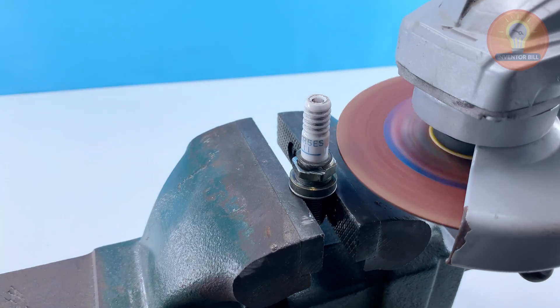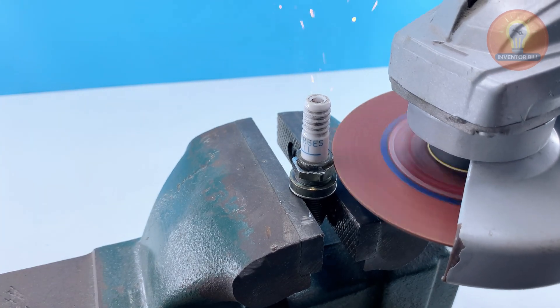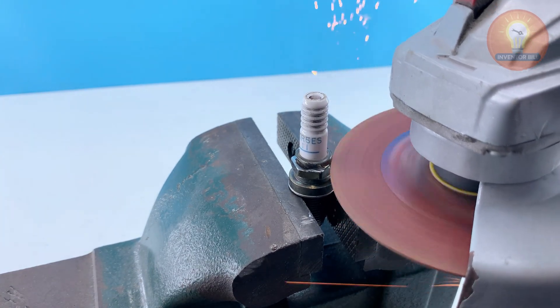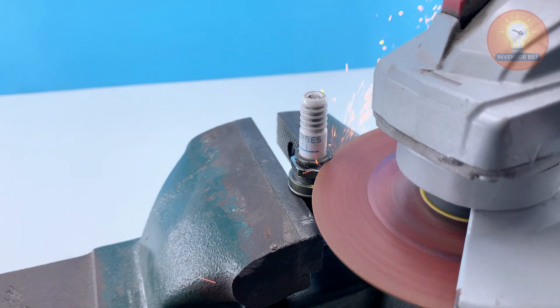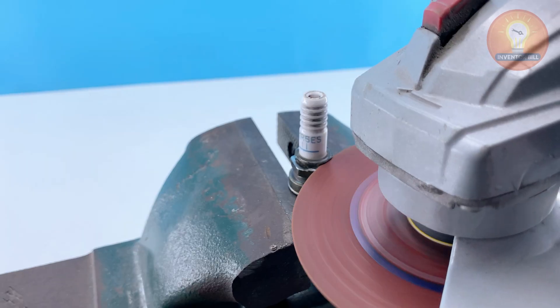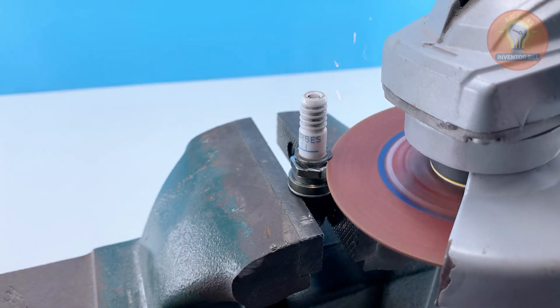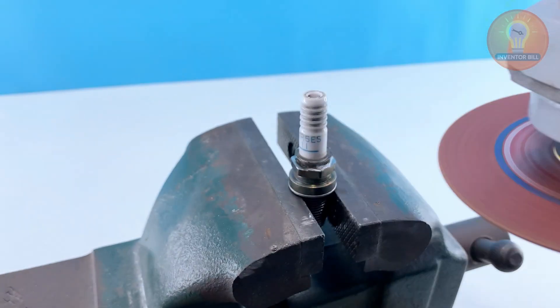Let's start with the main part, the old spark plug. First, grab one from any small engine or car. Clamp it gently in a vise so it stays steady while you work. Use a wrench or pliers to loosen and remove the metal shell around the porcelain core.